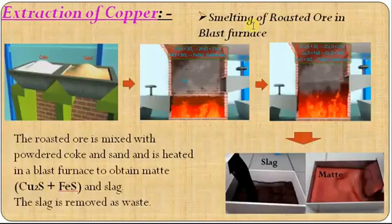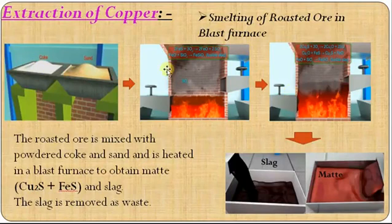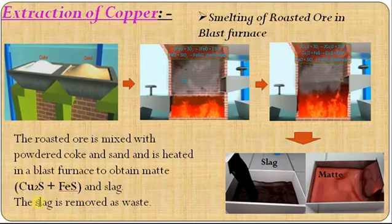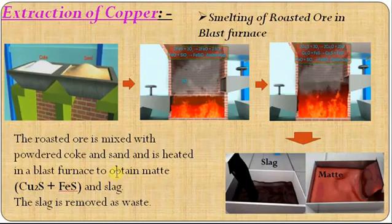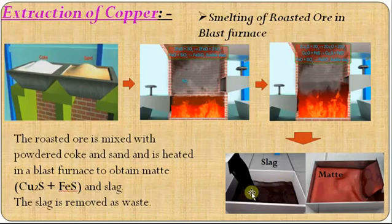The next process is smelting. In this, coke and sand are added in the blast furnace. The sand is used as a flux, which combines with the impurity — FeS — to form slag. The roasted ore mixed with powdered coke and sand is heated in a blast furnace to obtain matte. Matte is a mixture of copper(I) sulfide and iron(II) sulfide. The slag — iron silicate — is collected separately, and the matte is treated for the next process. This process is called smelting.